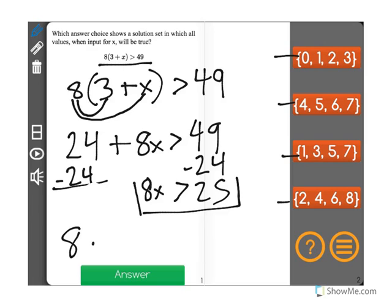What I know is that 8 times 3 is equal to 24. So if I were to input 3 for x here, that would read 24 is greater than 25, which we know is not true. So that shows me that x needs to be greater than 3. So all values must be greater than 3.